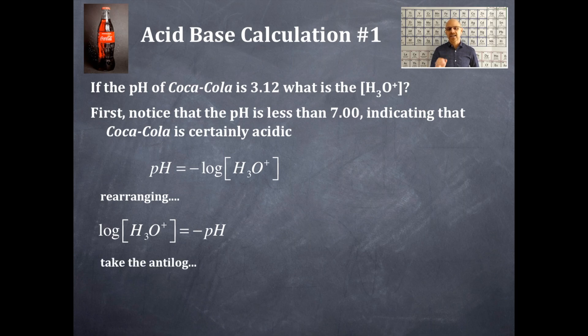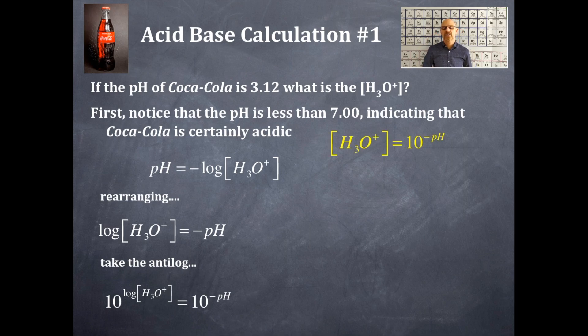Then we're going to take the antilog of both sides here, which is 10 to the, and we're going to now get hydronium ion concentration is equal to 10 to the negative pH. And that's up here right in the right hand corner here in the yellow. Hydronium ion concentration is equal to 10 to the negative pH.